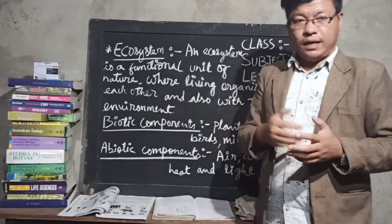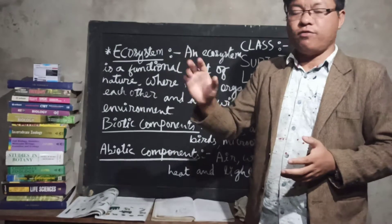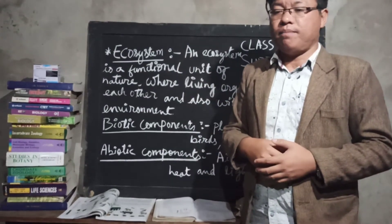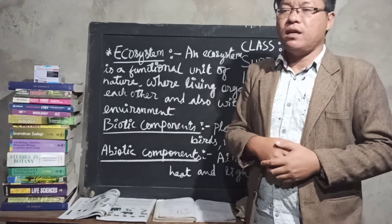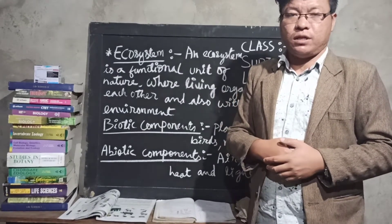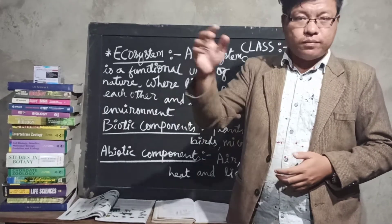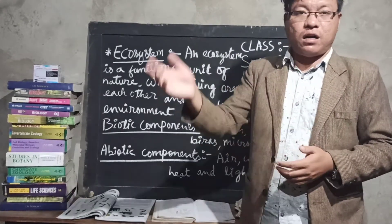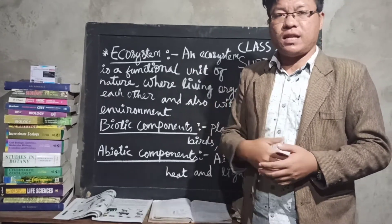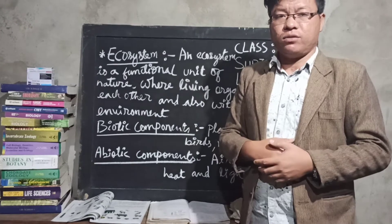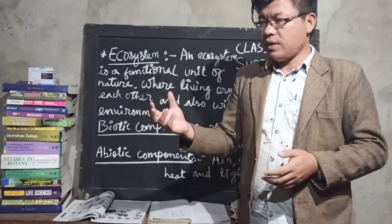In an ecosystem, producers come first and then it will be followed in sequence by the primary consumers. Primary consumers are like herbivorous animals. Then after the herbivorous animals, carnivorous animals or carnivorous organisms will come — examples like lion, tiger, and all those.